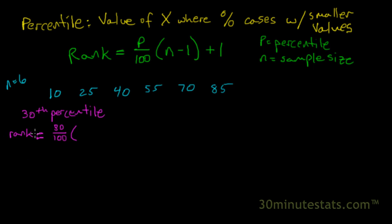We'll say that our 6 minus 1, plus 1. So now we get 0.3 times 5, which is going to be 1.5, plus 1, is going to give us a result of 2.5.